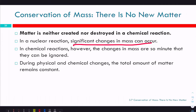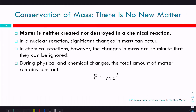In nuclear reactions, you're actually converting some mass into energy — that's Einstein's E = mc². For any amount of matter you convert into energy, you multiply that amount by the speed of light squared (3 × 10⁸ m/s). That's where the energy in nuclear weapons and nuclear reactors comes from. In chemical reactions, though, any changes in total mass are so minute that we just ignore them. So in this class, the total amount of matter stays constant.